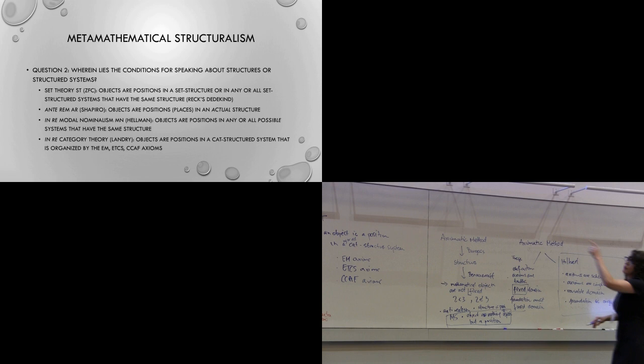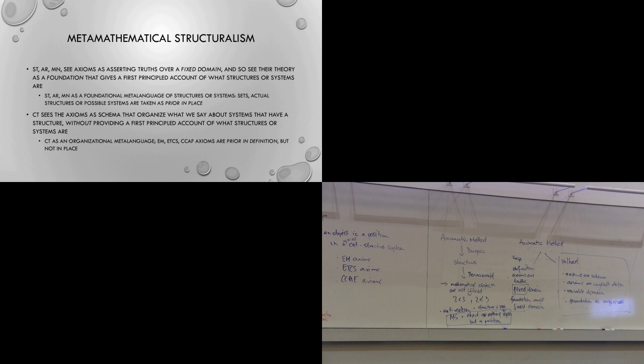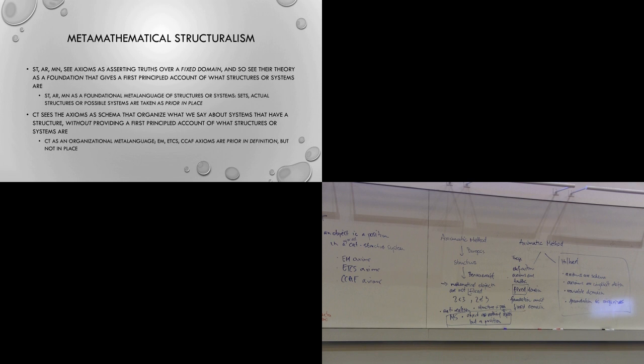The position I've argued for is that category theory has it so that objects are positions in a category-structured system. What I've argued is that set theory, anti-rem structuralism, and modal nominalism see axioms as asserting truths over a fixed domain — they must assume their theory as, in some sense, a foundation, whether that's set theory, structure theory, or in the case of Hellman, a modal interpretation of concreta. Something must act as a foundational meta-language for talking about structures or systems. And these are sets, actual structures, possible systems — taken, borrowing a distinction found in Aristotle, as prior in place.